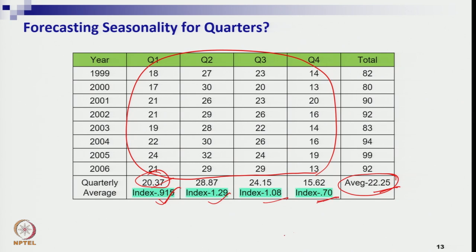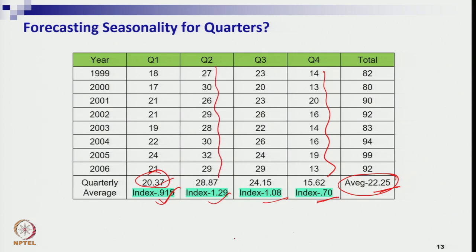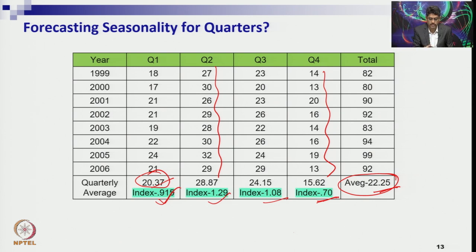Quarter 4 data shows low sales, but quarter 2 data shows high sales. Suppose it is an agro product or fertilizer — on monsoon they have high sales because quarter 2 belongs to the monsoon season. In September also, agricultural processes are ongoing, so they need more fertilizers and agrochemicals, giving good sales in quarters 2 and 3.